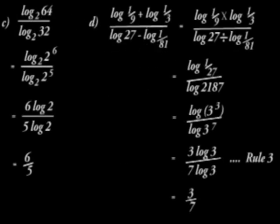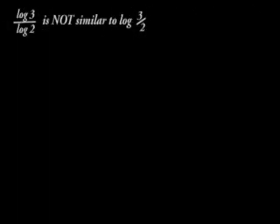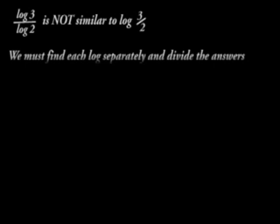The same procedure is followed for C and D. Look at these examples keenly and identify the trick behind the solutions. Note that log 3 over log 2 is not similar to log 3 over 2. We must find each log separately and divide the answers. Note that you must never cancel out logs. It is just a word.